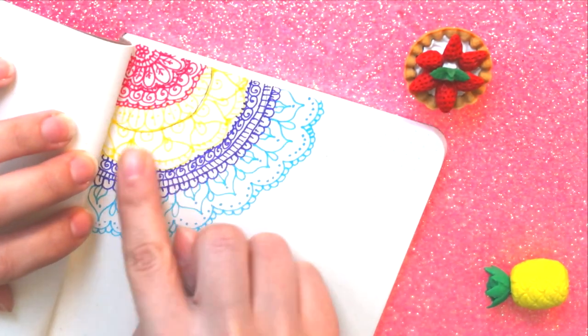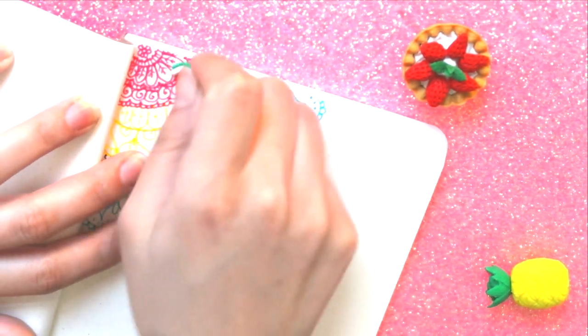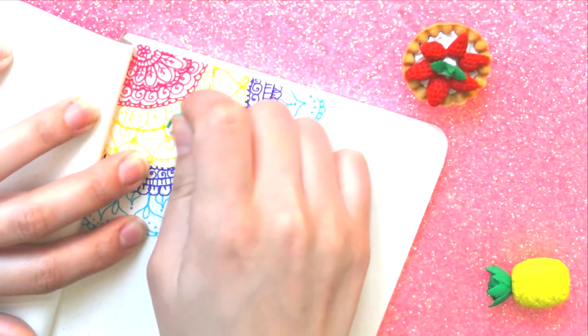Now here with my watermelon eraser, I'm going to remove those lines that I made. Remember to not press too hard on this part because later it's going to look gray and very ugly.